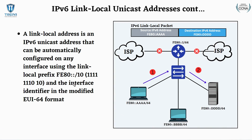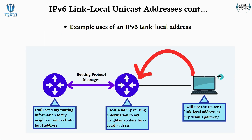A link local address is unicast and it's going to be automatically configured on any interface using the link local prefix of FE80. For example, for this computer to communicate to this router's interface, and also routing protocol messages which we'll learn about later — they're going to use the link local addresses of their neighbor to send routing protocol messages.